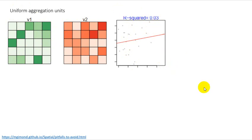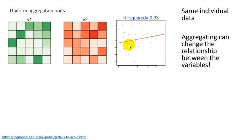This has serious implications. If you're not transparent about it, you're lying. So aggregating can change the relationship between the variables. It's the same underlying individual data. But now we've created a stronger positive relationship between income and water consumption just by aggregating or averaging over this area.